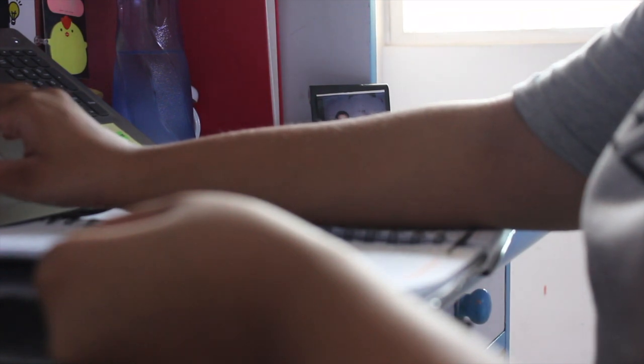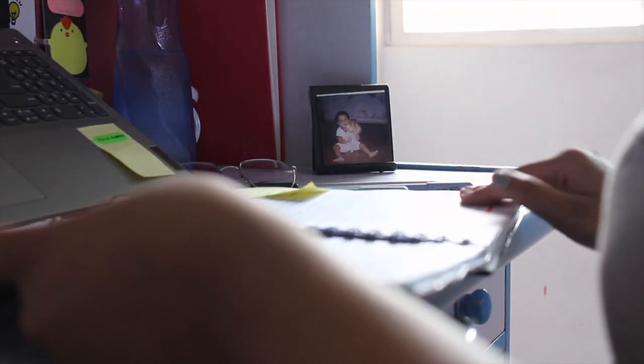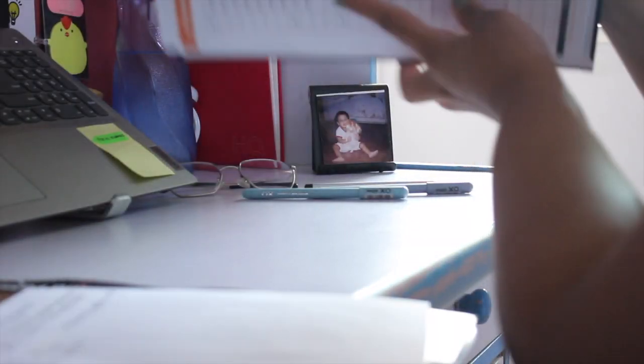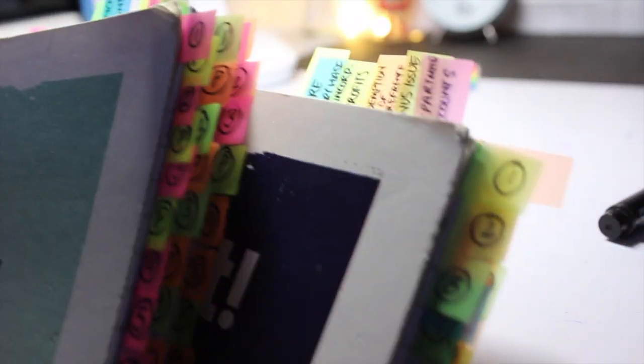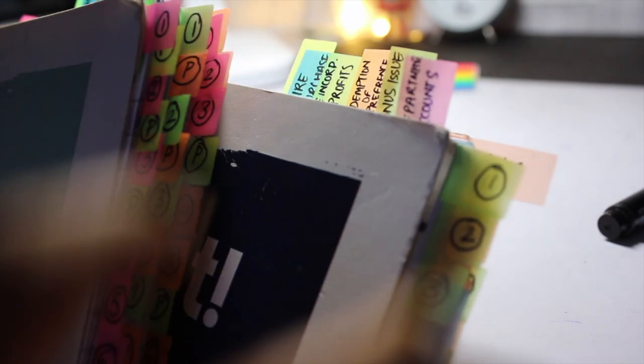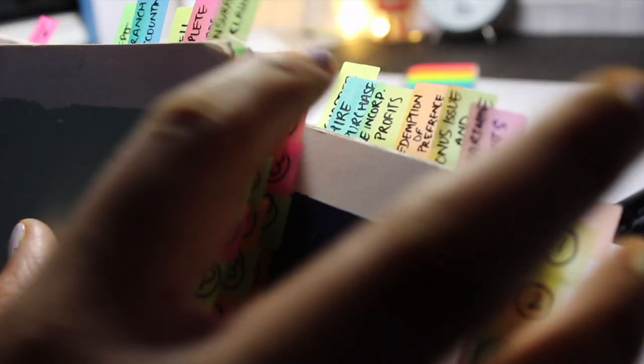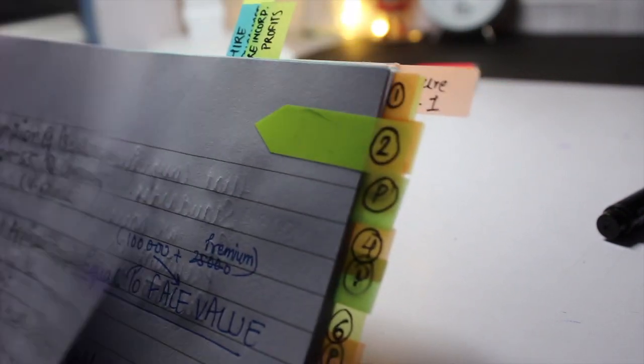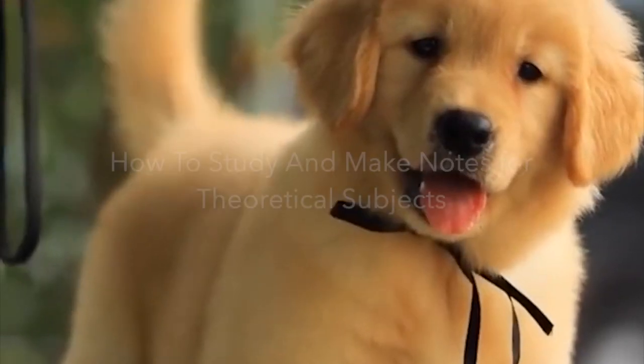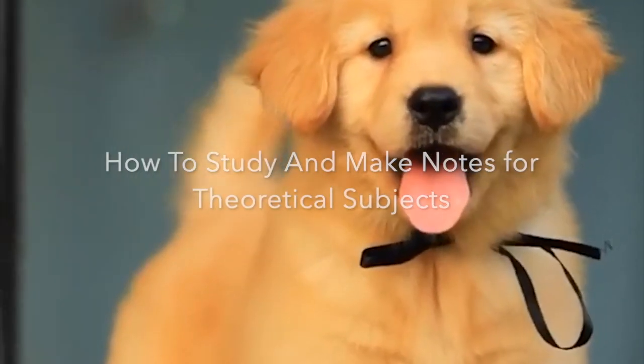Even after you number, you still have to search for the pages, whereas with stick notes it is right there in front of you. For example, if I have to open lecture number two of preferences, I just have to see for preferences and the lecture number and there it is. Now let's give a spotlight to theoretical subjects and how to make notes for them.